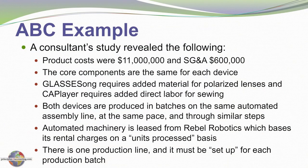We decided to further evaluate our products using activity-based costing. A consultant determined total product cost of $11 million and SG&A of $600,000, consistent with the income statement. We also determined that core components — electronic chips, wiring, and so forth — are the same in each product. Glasses Song requires a little more material for polarized lenses and Cap Player requires extra labor for sewing, but otherwise they are essentially the same product.